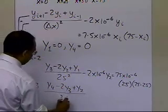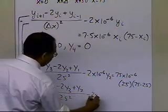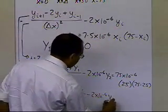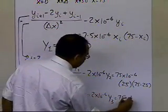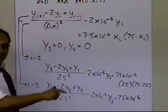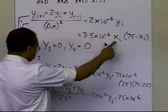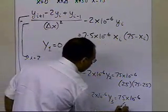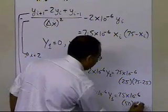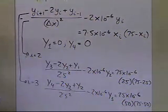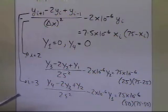divided by 25 squared, minus 2 times 10 to the power minus 6 times y3, equals 75 times 10 to the power minus 6. This is the right-hand side. I have to substitute the value of x at node 3, which is 50, times 75 minus 50. So I have to be careful about what I substitute for the proper values of x.